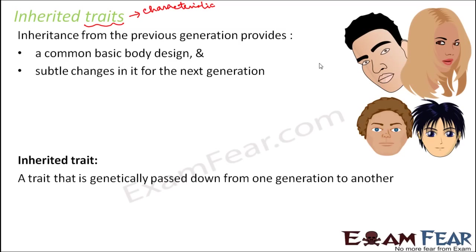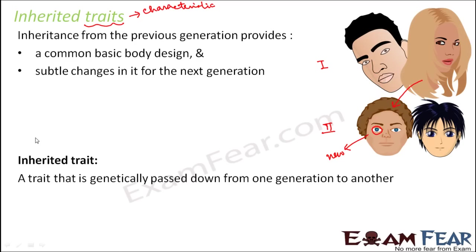Looking at this example, you can see there are a few things that have been directly passed on from one generation to another. This is the first generation and this is the second generation. The hair color has been simply passed on, but if you look at the eye color, that is something new — nobody had blue eyes before, but now it is new. This new eye color can get transmitted to generation three. Characteristics which get inherited from one generation to another are called inherited traits.